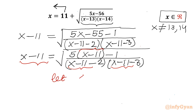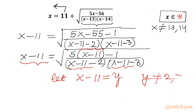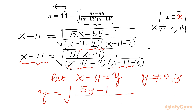So let us write x minus 11 equal to y. This means y cannot be equal to 2 (for x = 13) and y cannot be equal to 3 (for x = 14). So our equation becomes y equal to square root of (5y minus 1) over (y minus 2)(y minus 3).